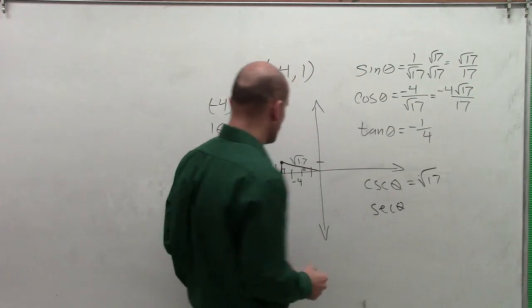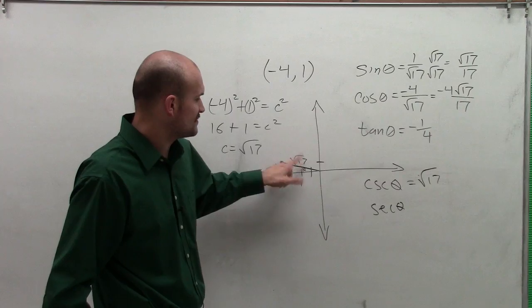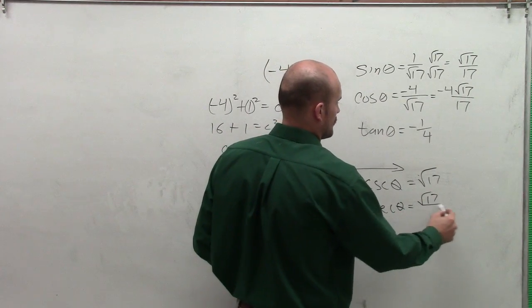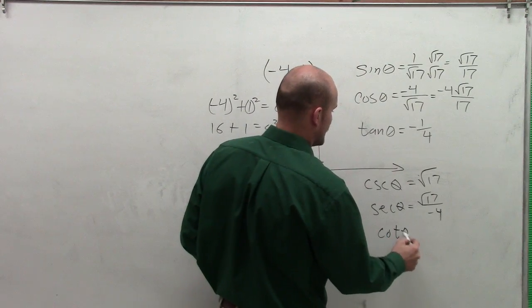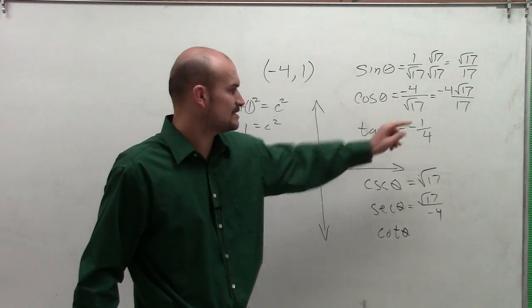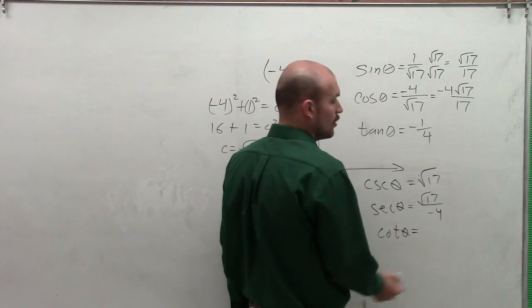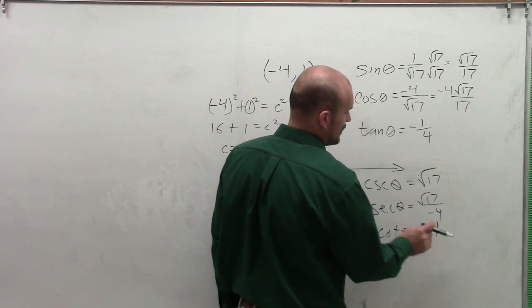The secant of theta is going to be √17 over -4. And the cotangent of theta is now going to be the reciprocal of -1/4, which will now be -4 over 1, which is just -4.